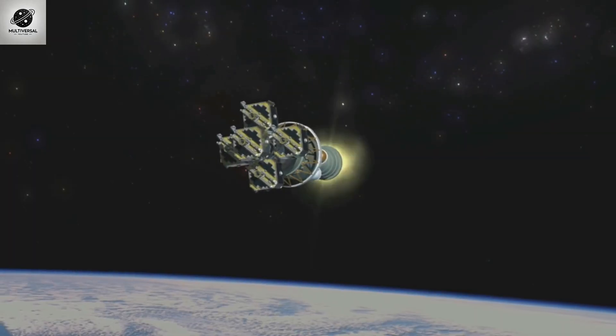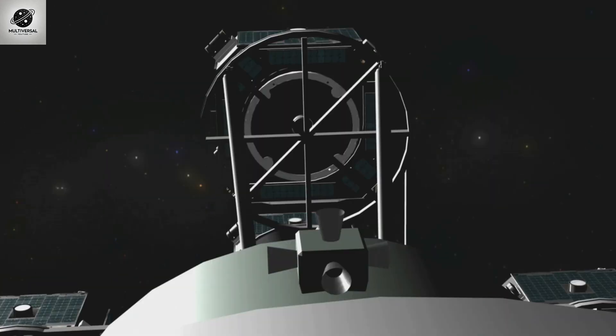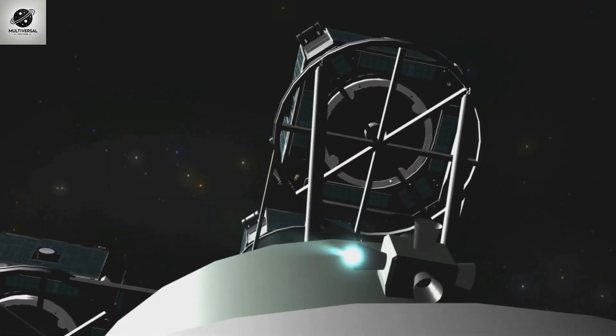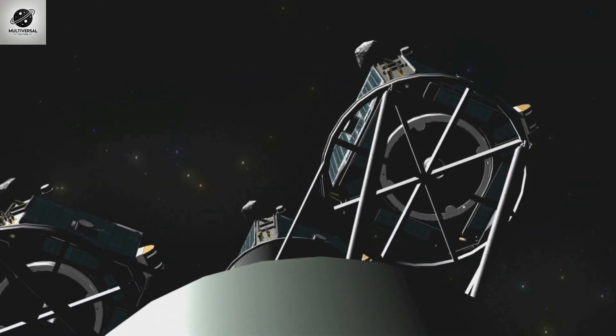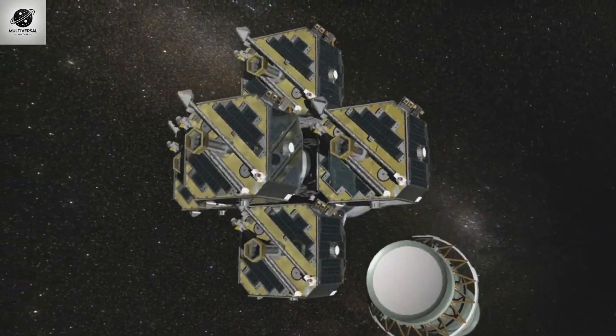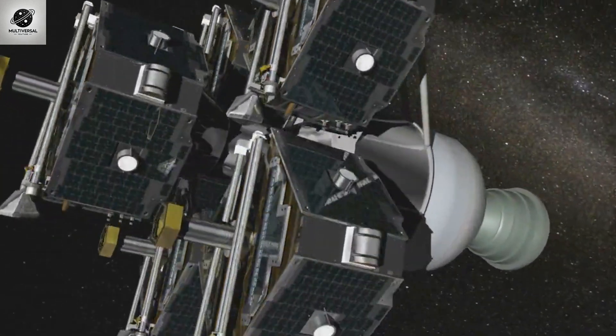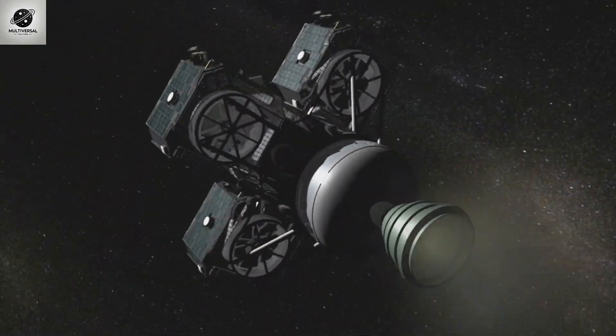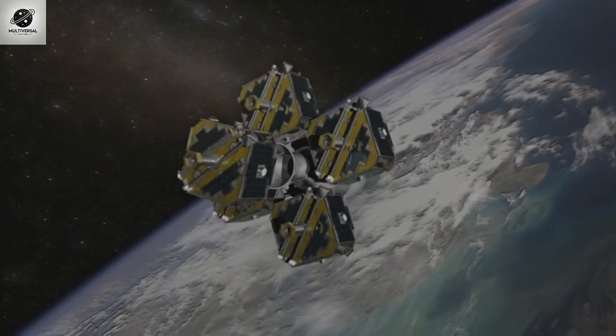NASA is actively studying how to push the boundaries of propulsion. The Breakthrough Starshot Initiative is one of the most ambitious projects aimed at reaching another star within our lifetime. The plan? Tiny spacecraft propelled by powerful lasers from Earth, accelerating to 20% the speed of light. At that speed, we could reach Alpha Centauri in just 20 years.